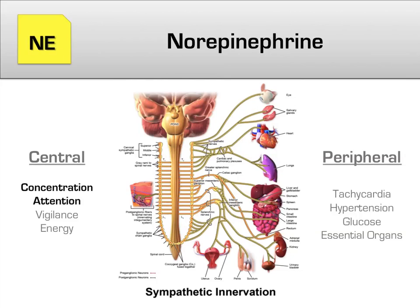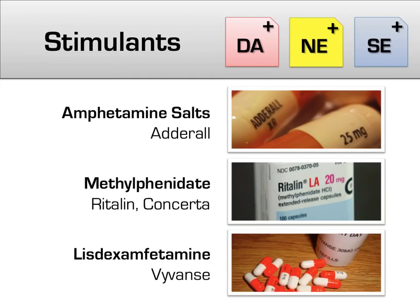Norepinephrine's functions also include concentration and attention in the central nervous system, so it should come as no surprise that all stimulants modulate norepinephrine as well. As a class, stimulants do not vary widely — no one stimulant has been shown to be more effective than any other, with an overall symptom response rate of about 70%. For testing purposes, you only need to recognize the names of stimulants, such as Adderall or Ritalin, many of which are well-known in popular culture.